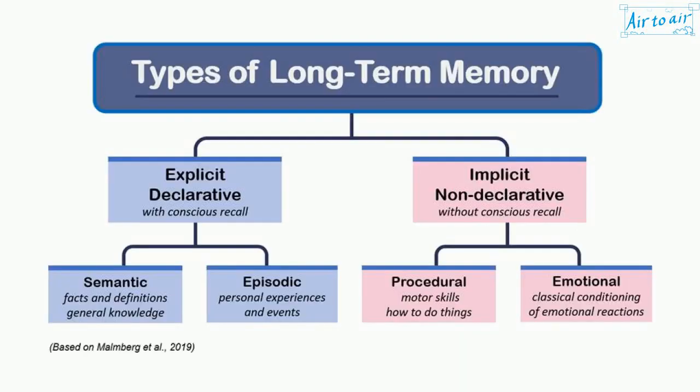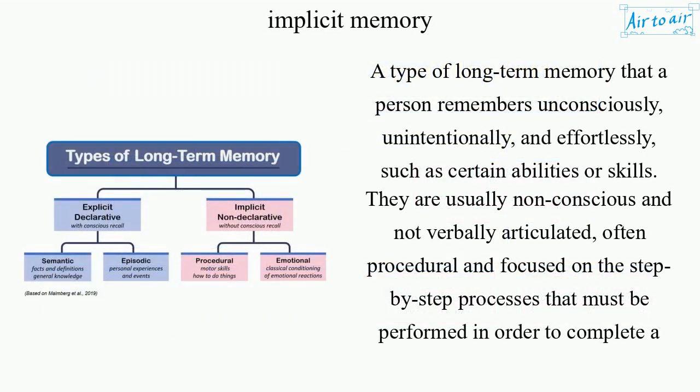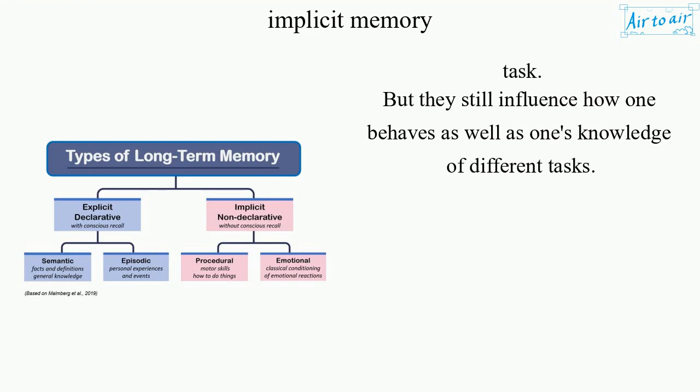Implicit memory is a type of long-term memory that a person remembers unconsciously, unintentionally, and effortlessly, such as certain abilities or skills. They are usually non-conscious and not verbally articulated, often procedural and focused on the step-by-step processes that must be performed in order to complete a task. But they still influence how one behaves as well as one's knowledge of different tasks.